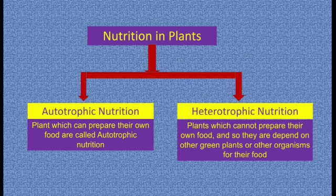There are two modes of nutrition in plants: autotrophic mode of nutrition and heterotrophic mode of nutrition. In autotrophic mode of nutrition, plants can prepare their own food and thus nourish themselves. Example: green plants.